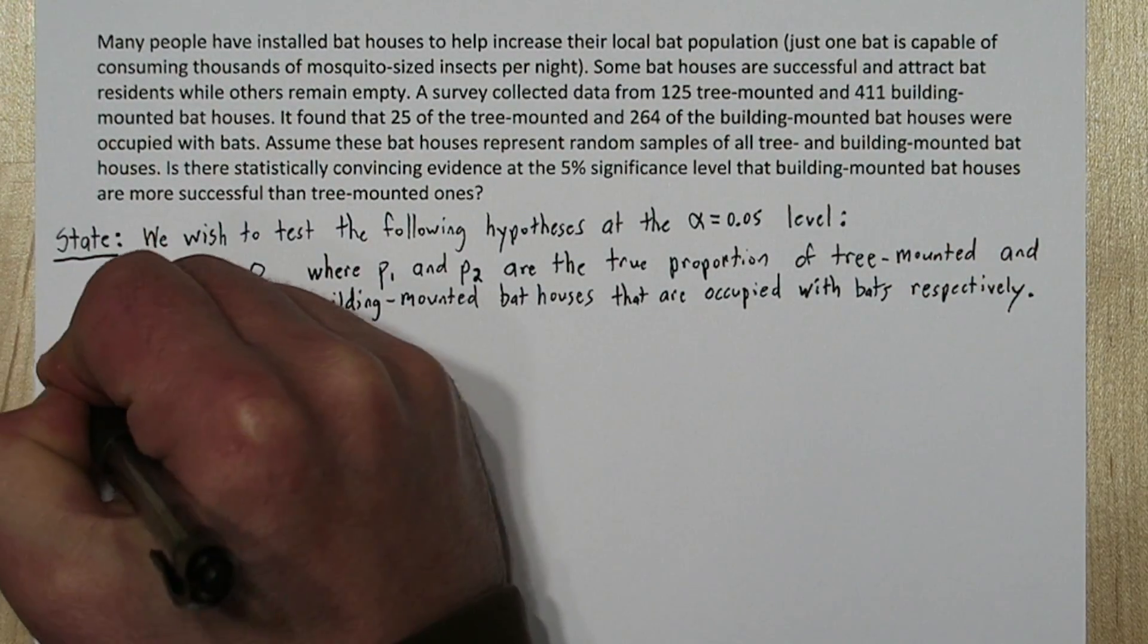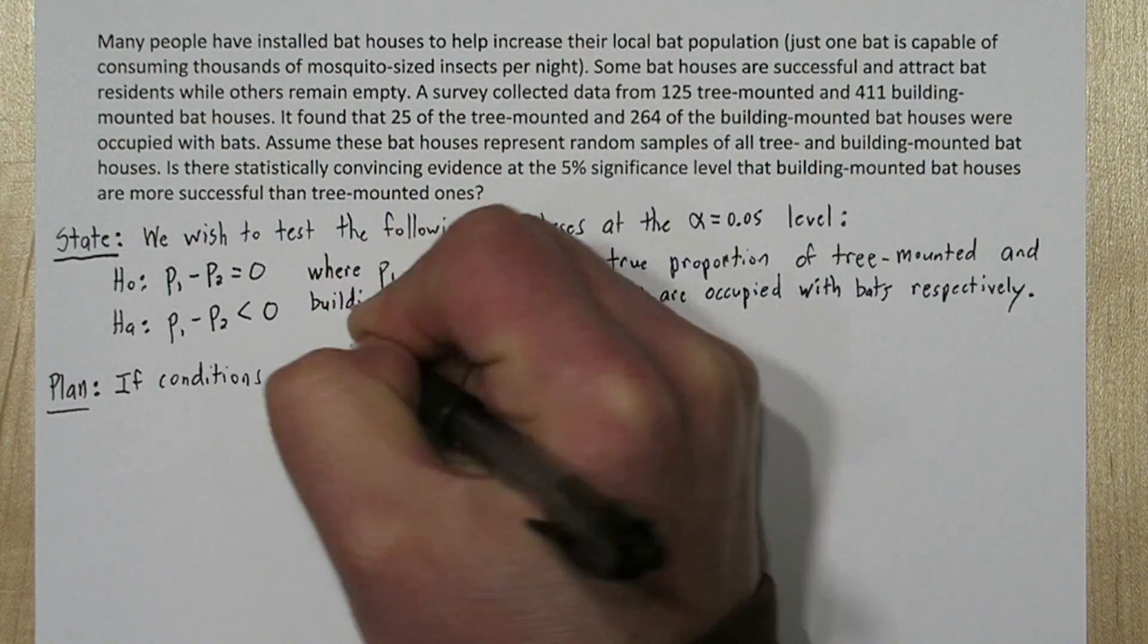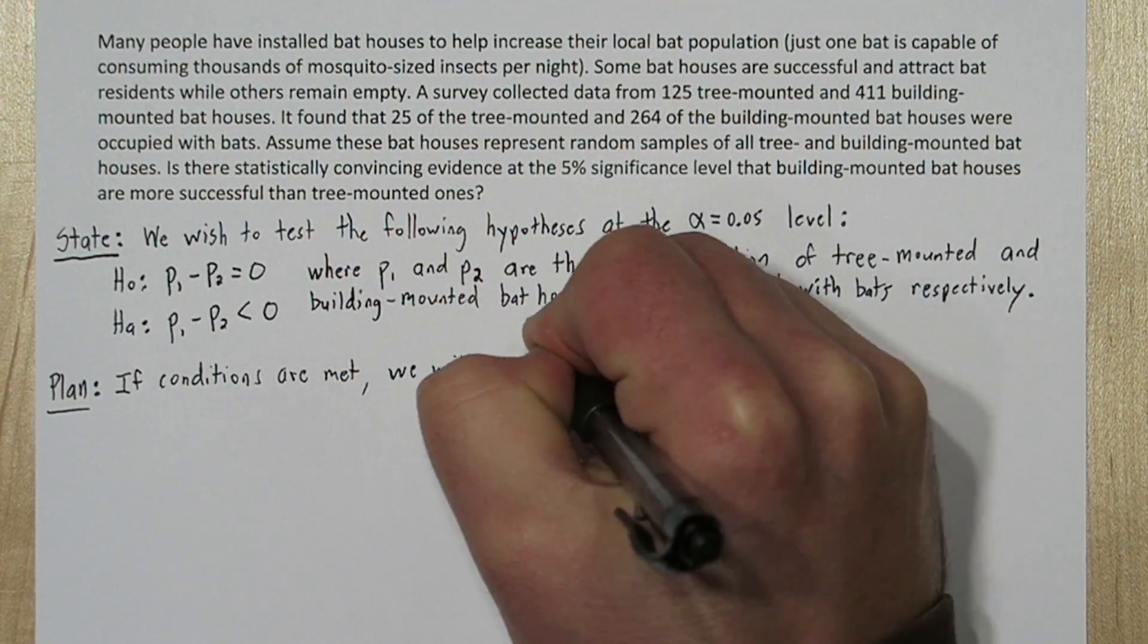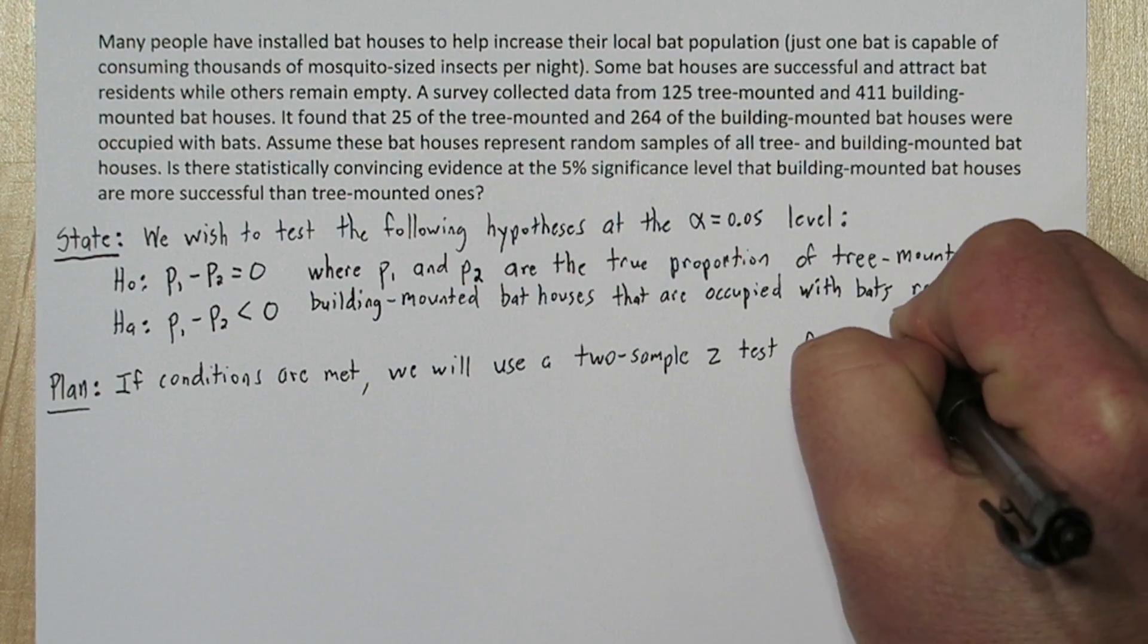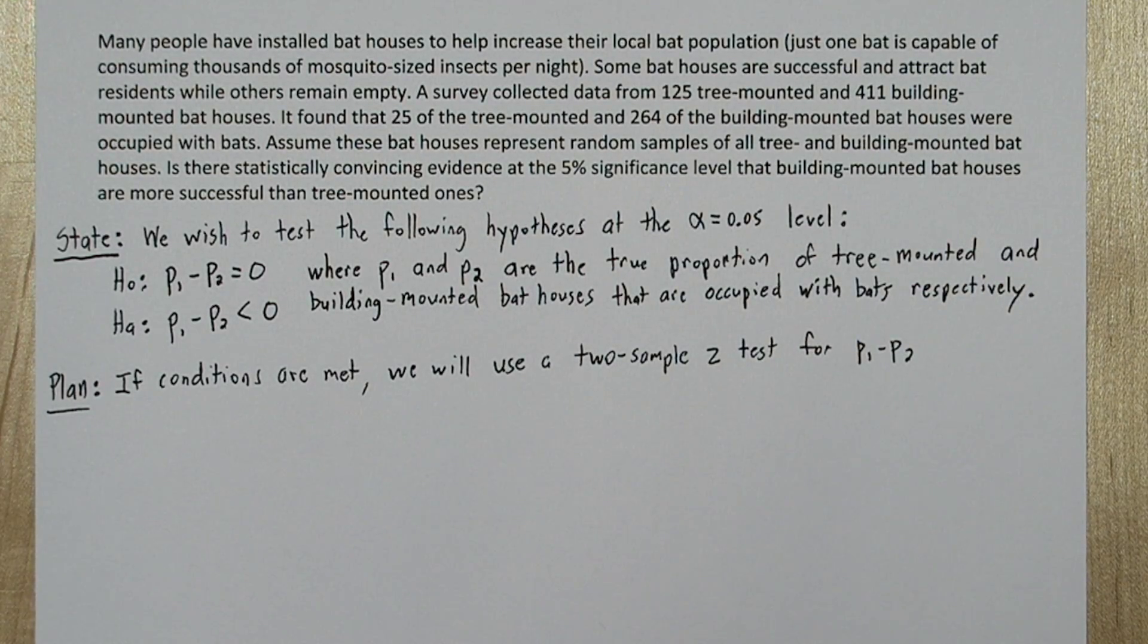In our plan step, we need to state our inference method and check conditions. So if conditions are met, we will use a two-sample z-test for difference in population proportions. That's our inference method.